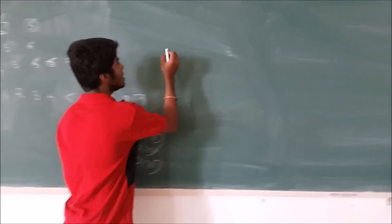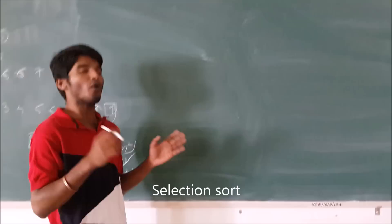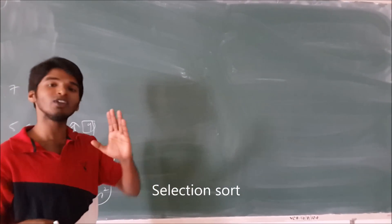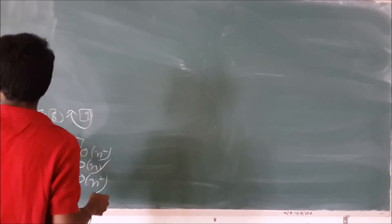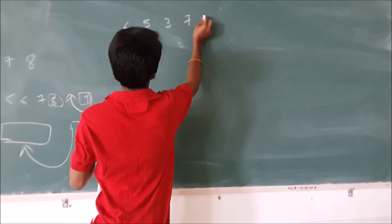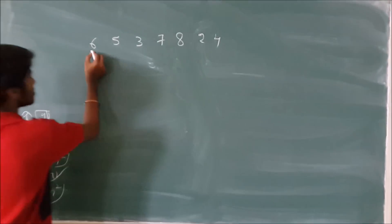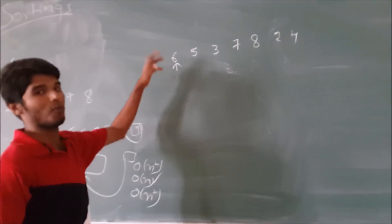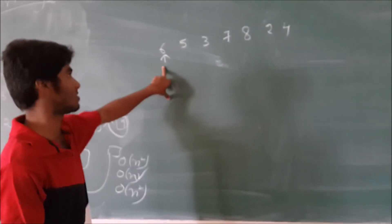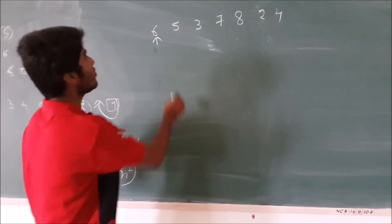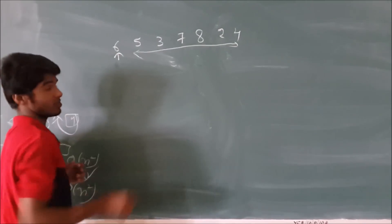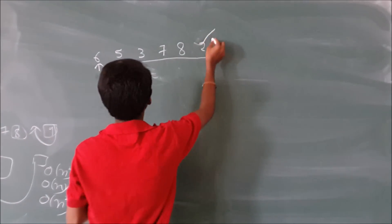If we come to selection sort, it is nothing but: we find the minimum of the elements among all the unsorted elements and place it in the right position. Like if we have 6, 5, 3, 7, 8, 2, 4 — we consider 6 as the initial minimum. We then find the actual smallest element in the array, which is 2. Now we swap 2 and 6, giving us 2, 5, 3, 7, 8, 6, 4.